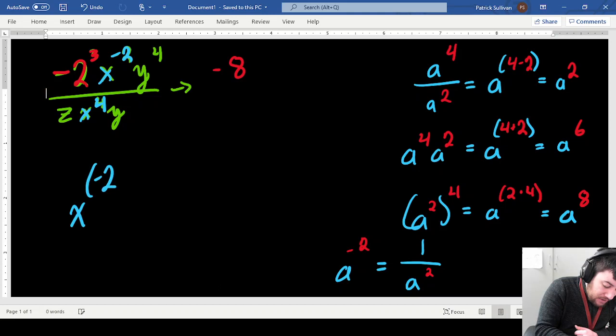And negative 2 minus 4, so again, x, and I'm taking negative 2 minus 4, just like my rule over here, is actually going to be x to the negative sixth, okay? So that's taking care of my x value.